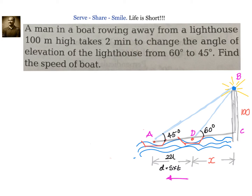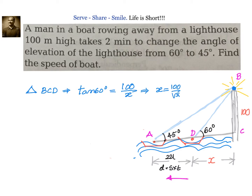Now we have two variables to find out — x and u. What we need exactly is the speed of the boat. Let us go to the triangles and write down the trigonometric ratios. In triangle BCD, we can write tan 60 equals opposite by adjacent — that is, 100 by x. So x equals 100 by root 3. That is equation number one.